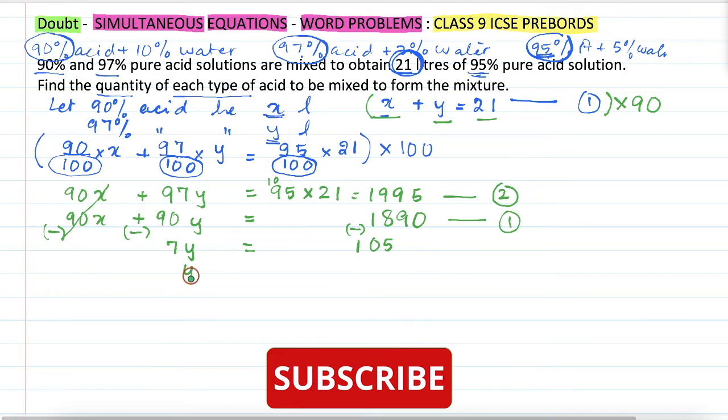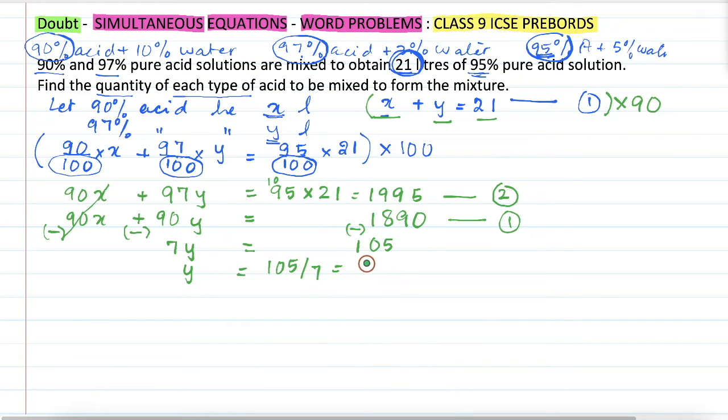So our y will be equal to 105 upon 7, which is 7 into 15, so 15 liters. Then we should substitute y equal to 15 in x plus y equal to 21, which is our equation 1.